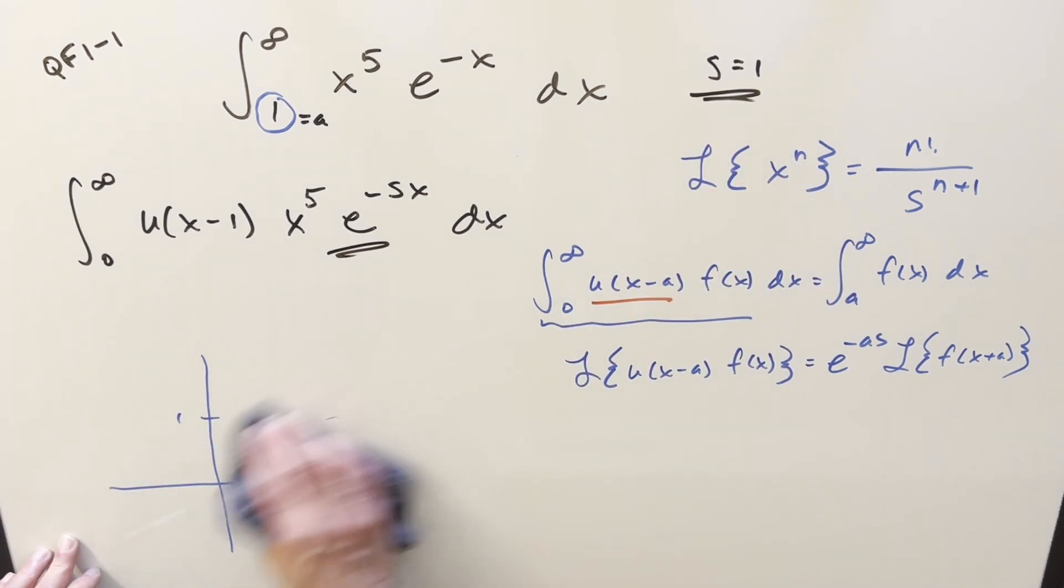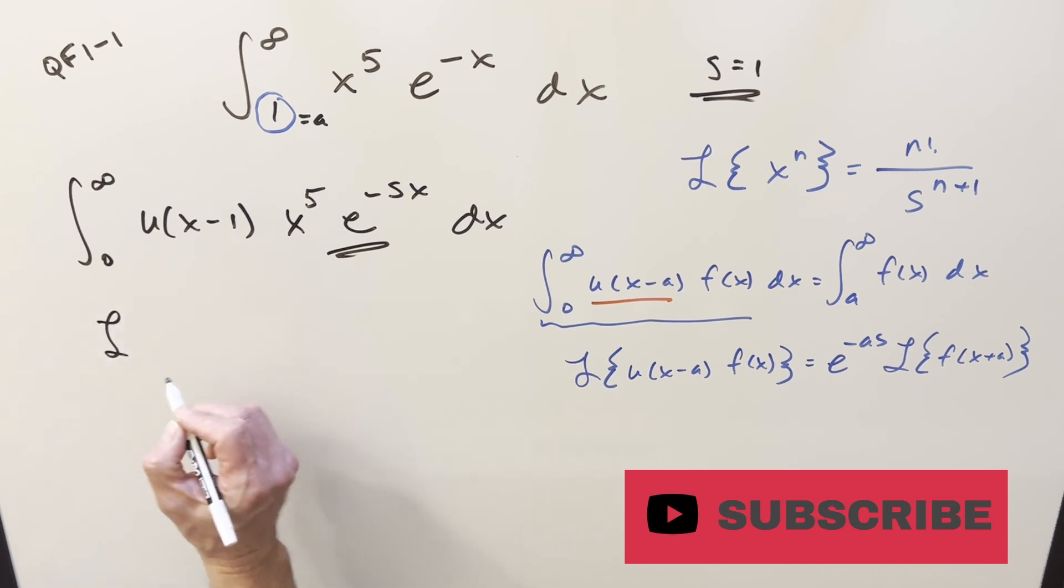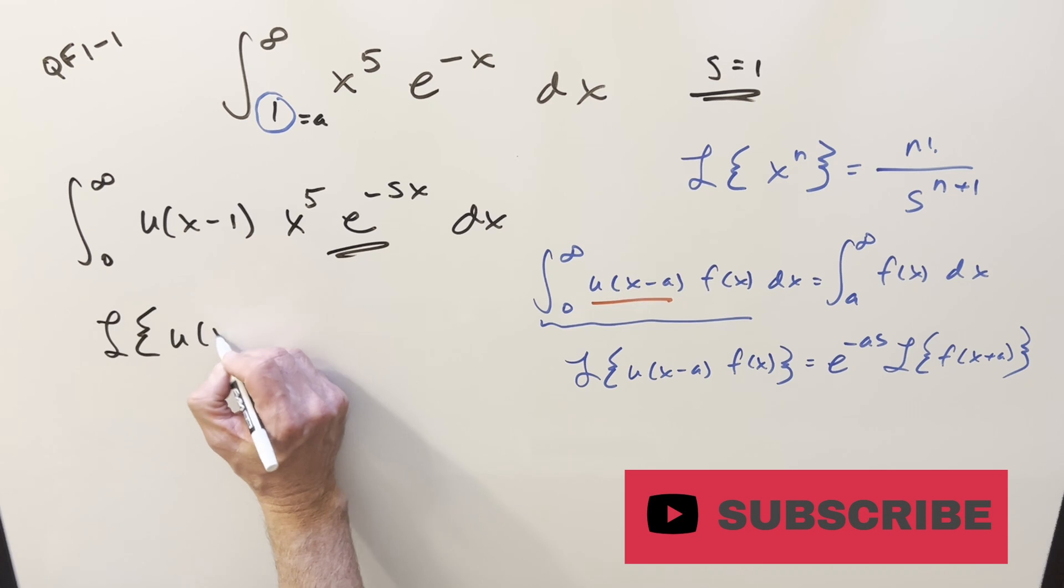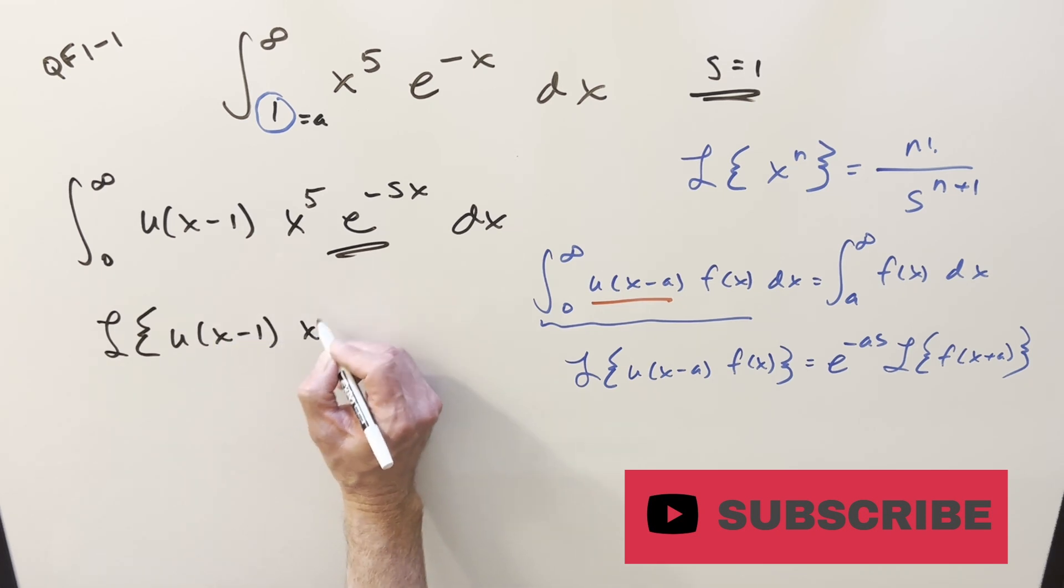But now that we've written it like this, that's going to allow us to treat this like a Laplace transform. Really this down here, the way we can write this is going to be, just using our definition of the Laplace transform, this is going to be the Laplace transform, u x minus 1 x to the 5th.